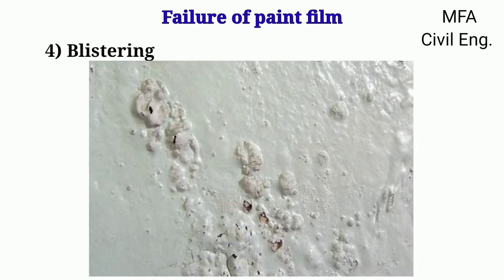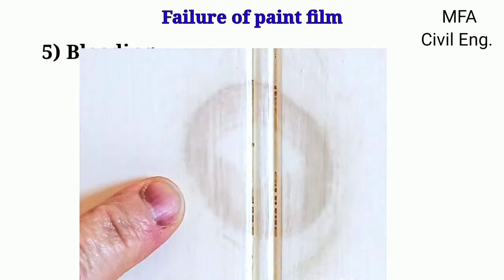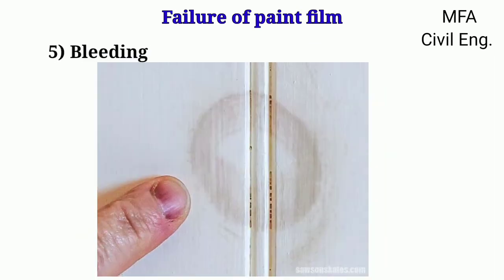Blistering occurs due to the presence of moisture in the surface of a wooden article. The inherent dampness comes to the top surface below the paint film and causes the blistering. This defect can be prevented by applying a prime coat of a dehydrating agent.